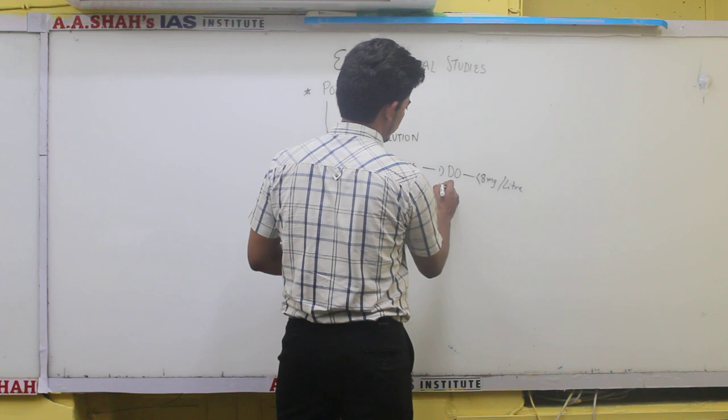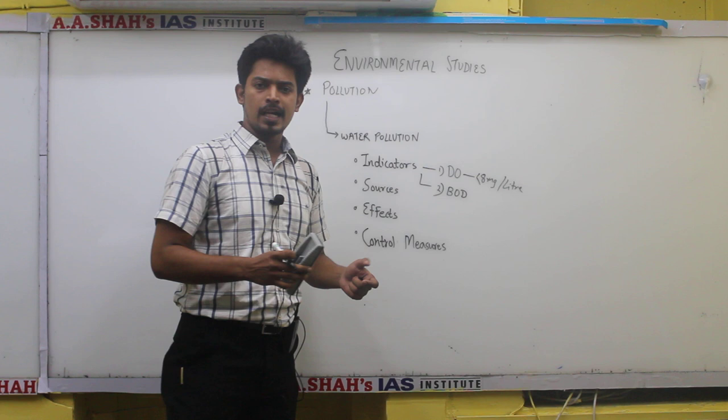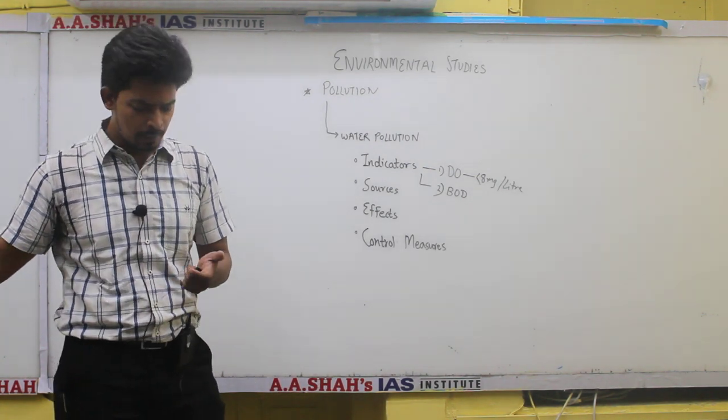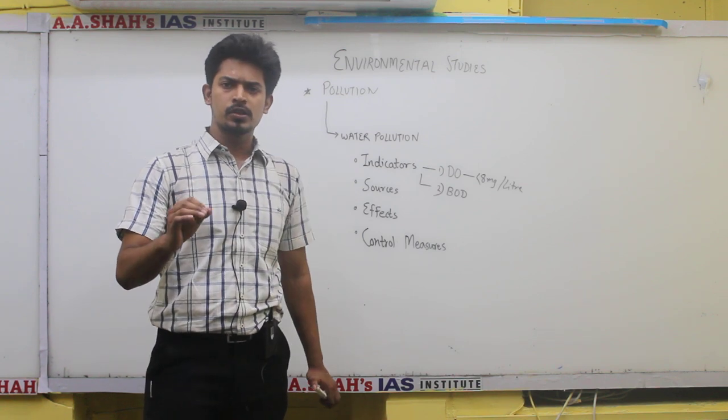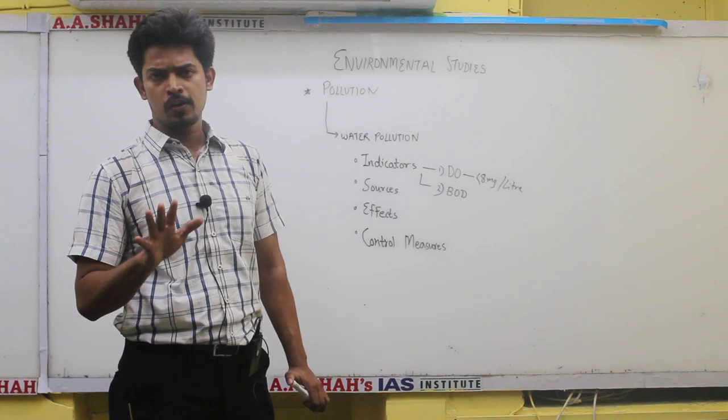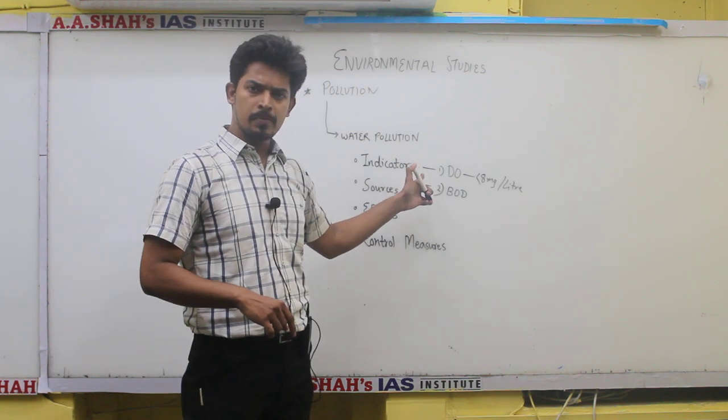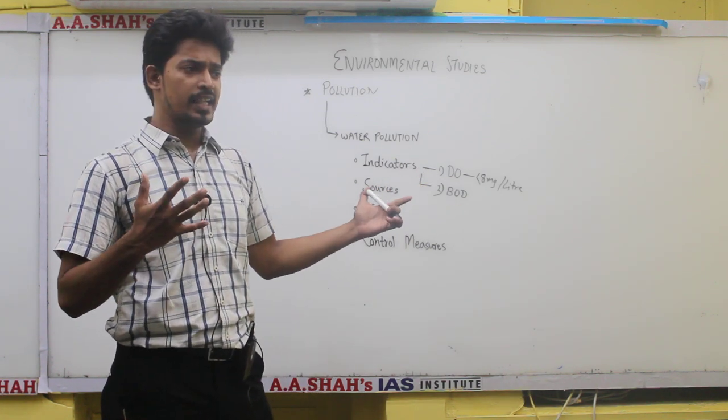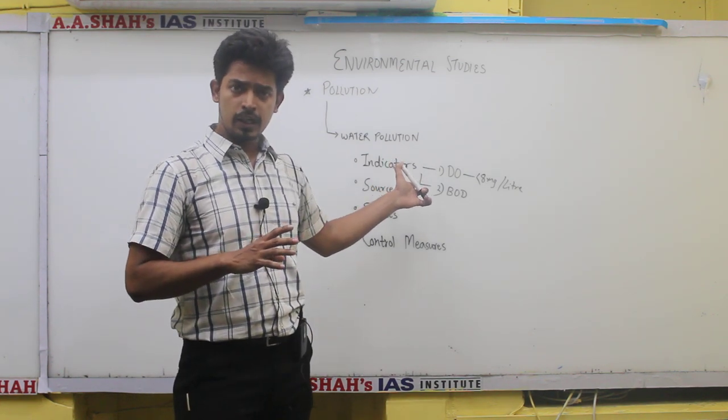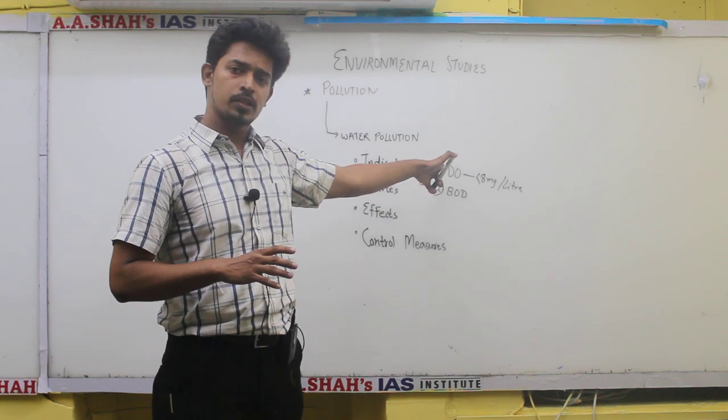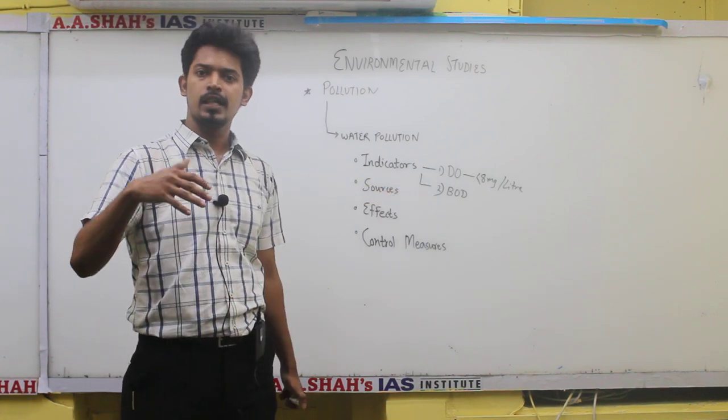The second indicator is BOD - biochemical oxygen demand. This indicator shows how much oxygen is required for bacteria to decompose organic matter. If BOD is high, bacteria needs a lot of oxygen to decompose the organic matter present in water. This indicates that dissolved oxygen is less, meaning the water is polluted. So high BOD means polluted water.